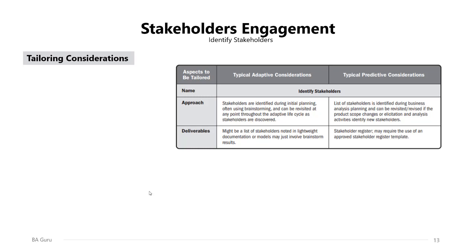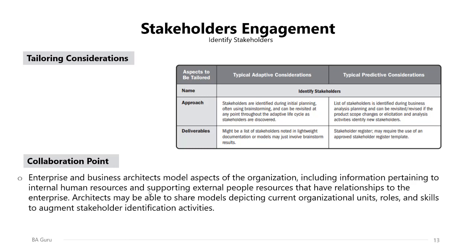In a predictive life cycle, the output will be a stakeholder register, which may require the use of an approved stakeholder register template found in the organizational process assets. Regarding collaboration, enterprise and business architects model aspects of the organization, including information pertaining to internal human resources and supporting external people resources that have relationships to the enterprise. Architects may be able to share models depicting current organizational units, roles, and skills to augment stakeholder identification activities.